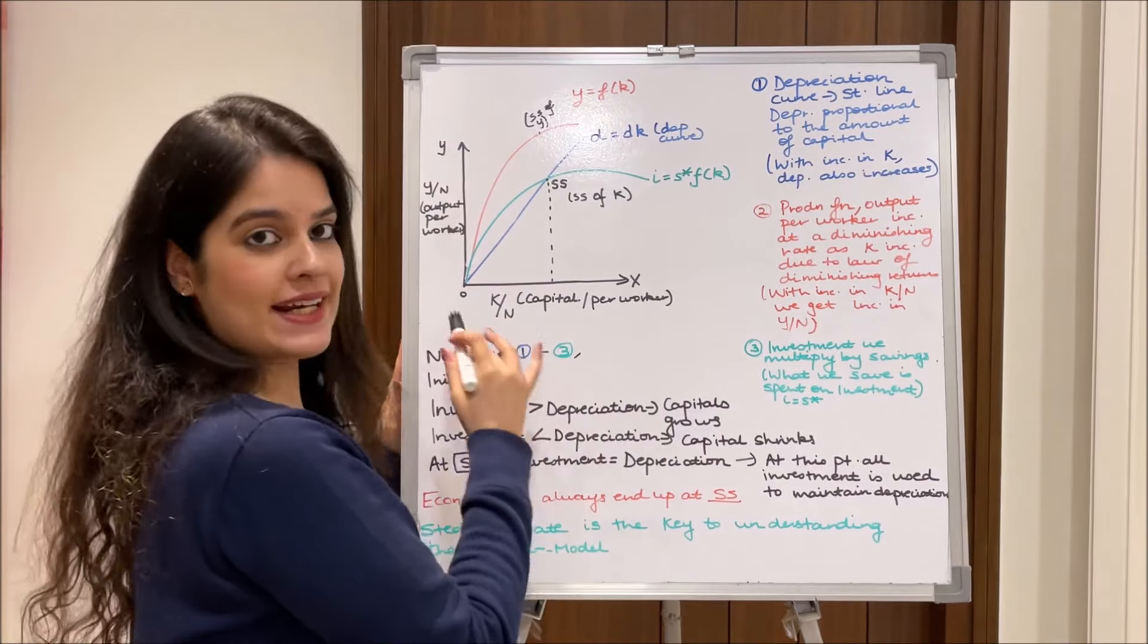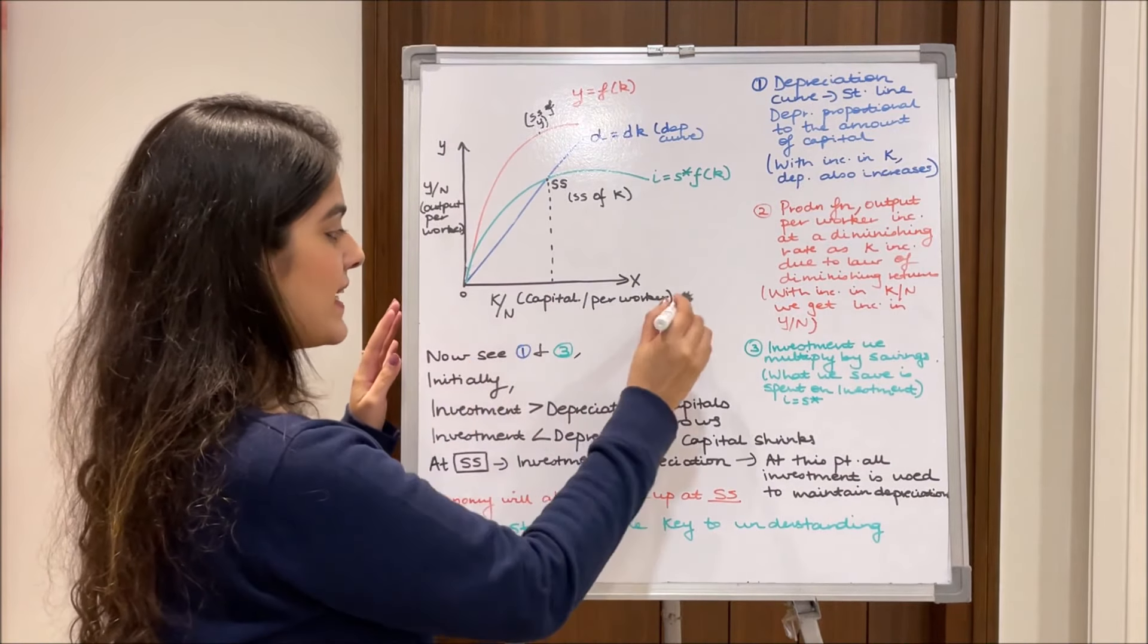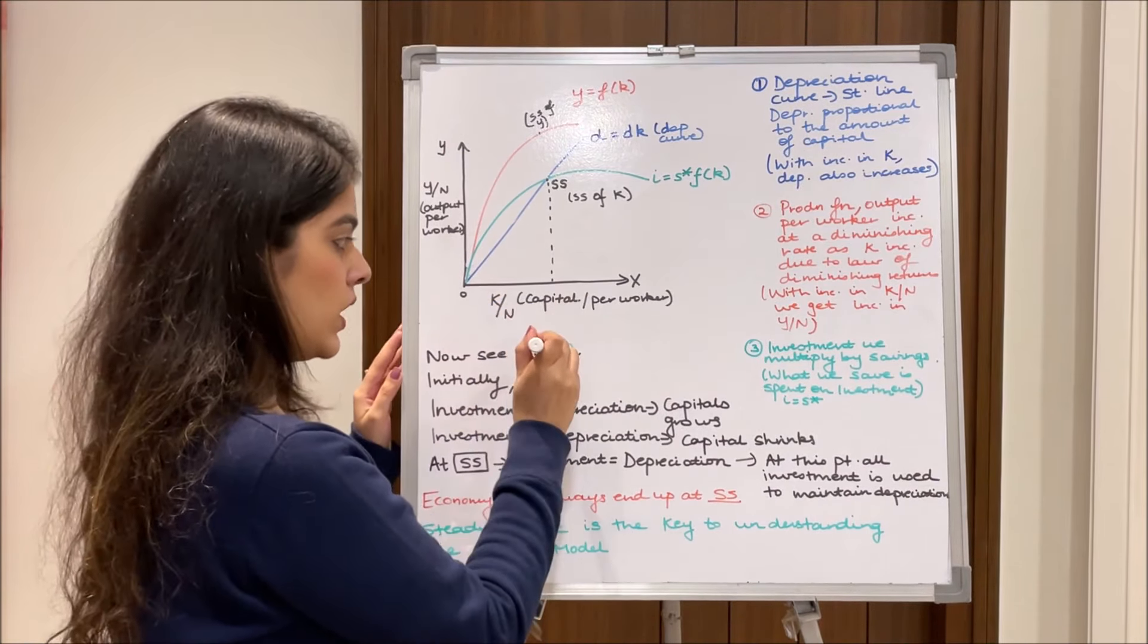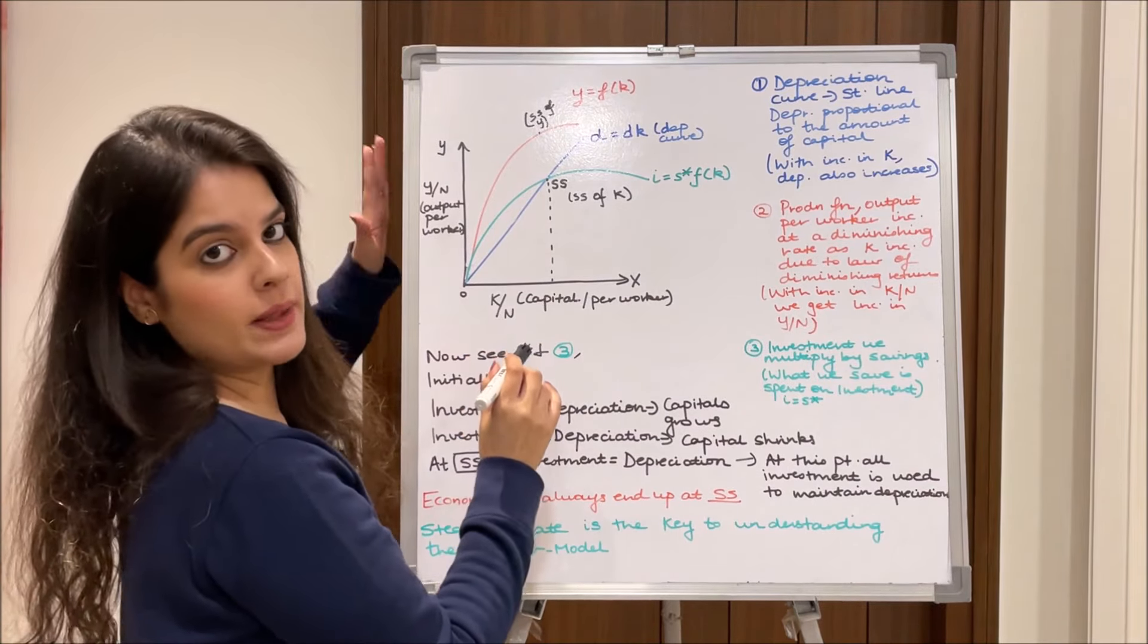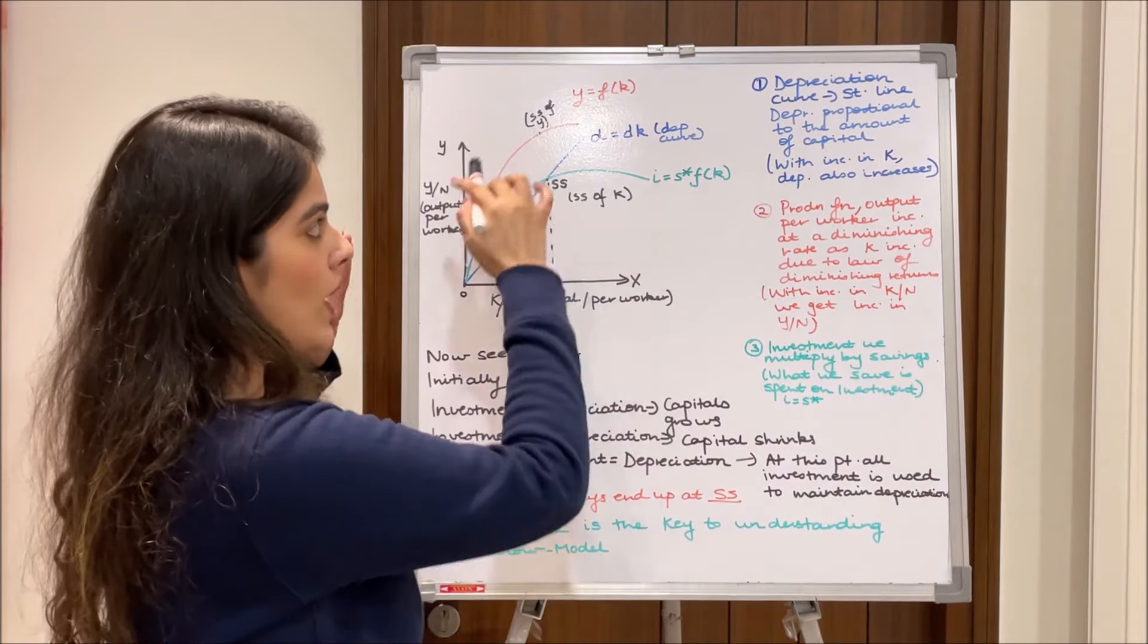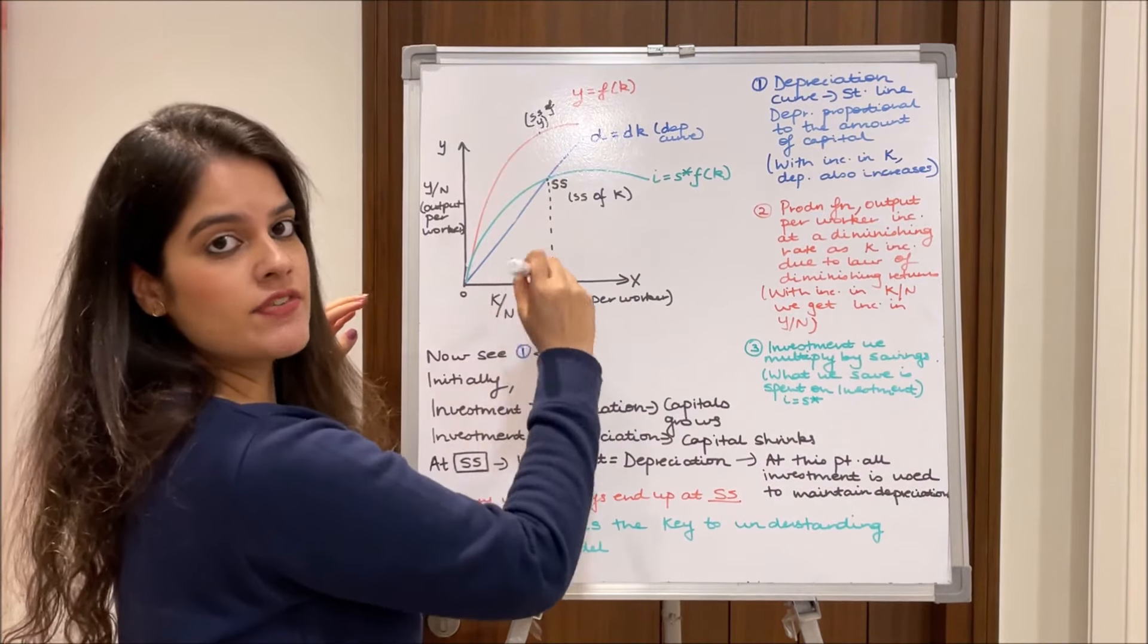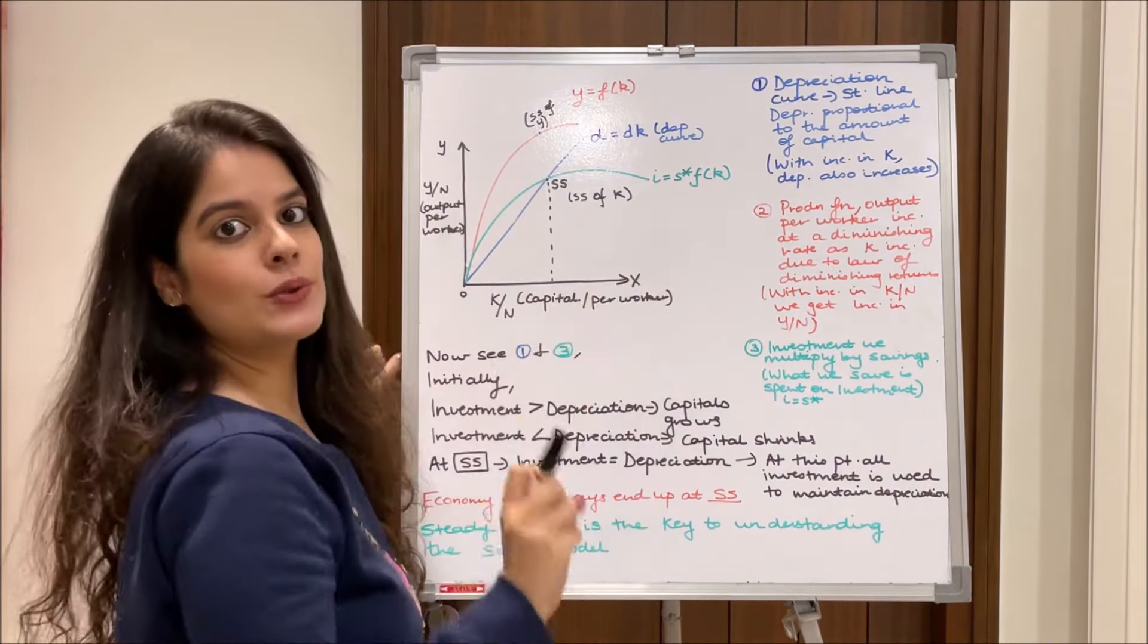We notice this diagram, here we have on the x-axis the capital per worker, that is k over n, and on the y-axis we have the output per worker, that is y over n. Now I'll be explaining to you the three curves. I have made them in different colors so that you don't get confused.